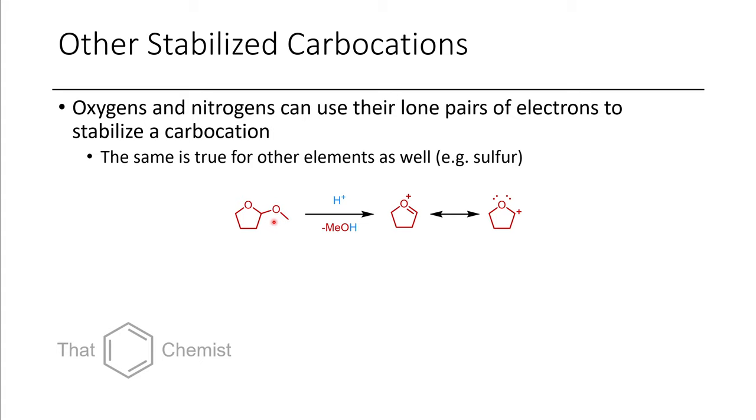So here we have this furan with a methoxy group off of the one position. And if we treat this with acid, methanol can be removed and an oxocarbenium can form. And so this carbocation is just stabilized by the electron density of the ether. And so this generates an oxocarbenium. And so you could draw it either way and it's still technically right. But this is what makes this a stable secondary carbocation.